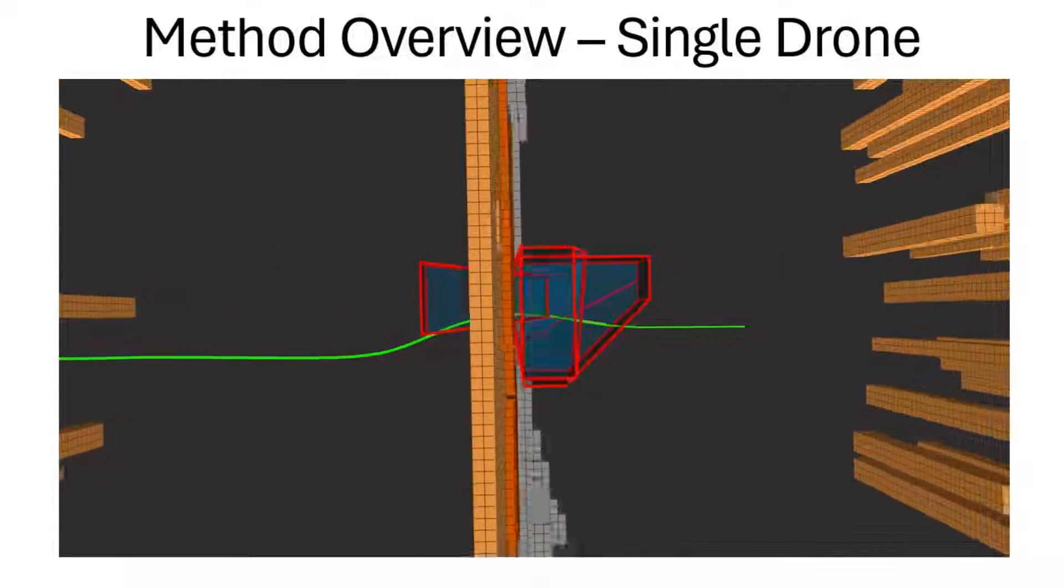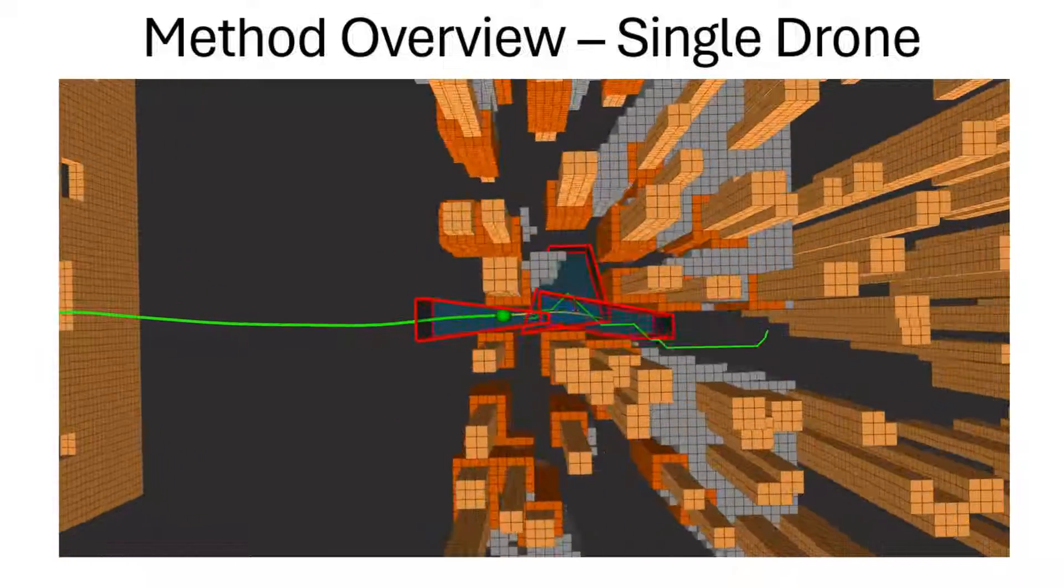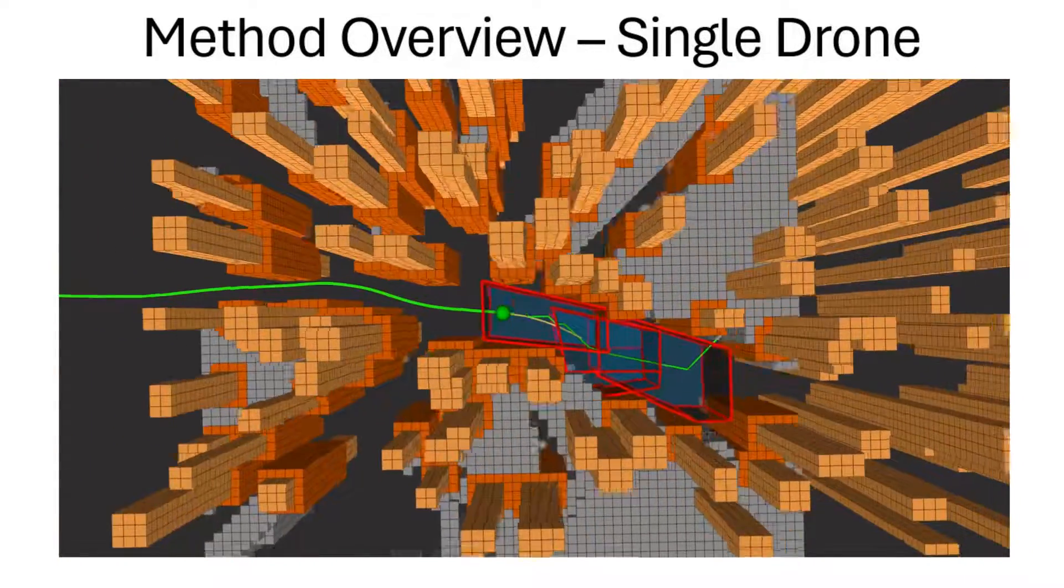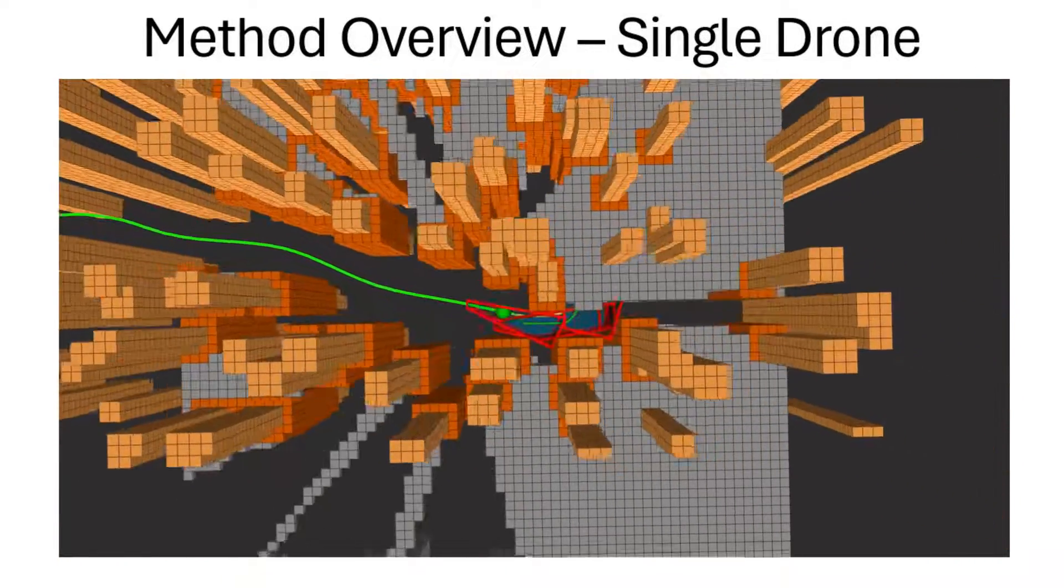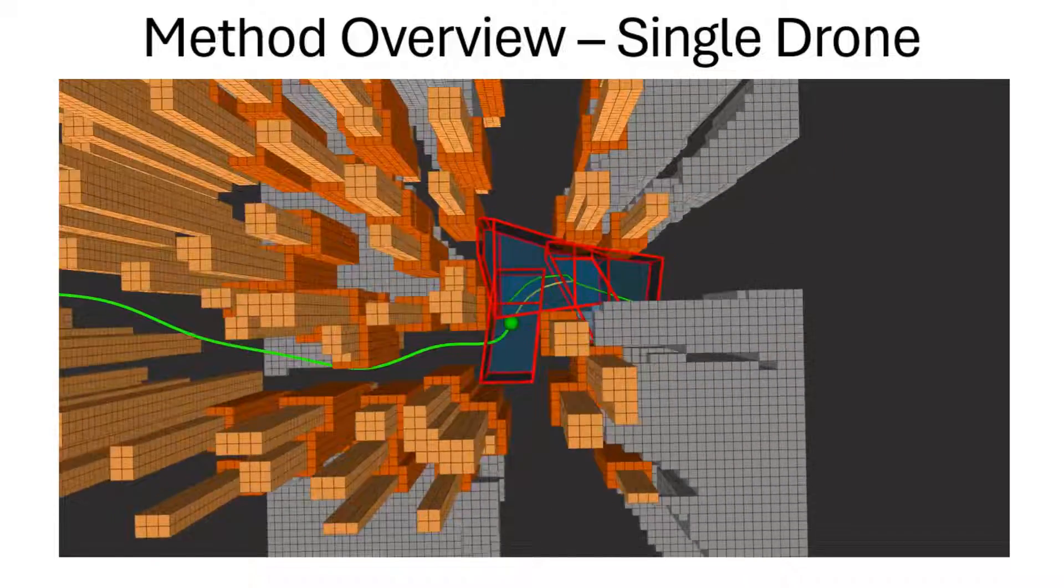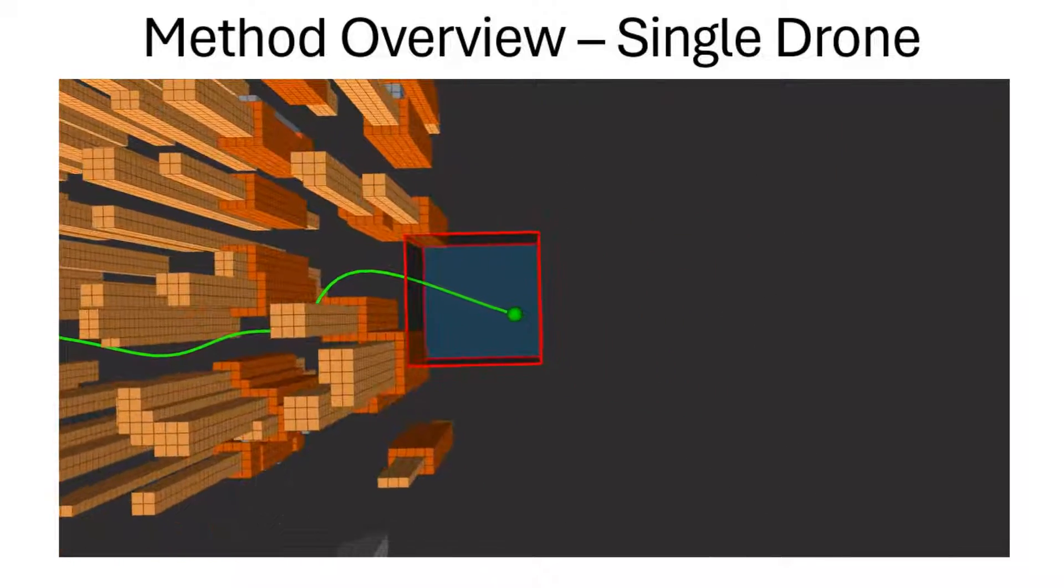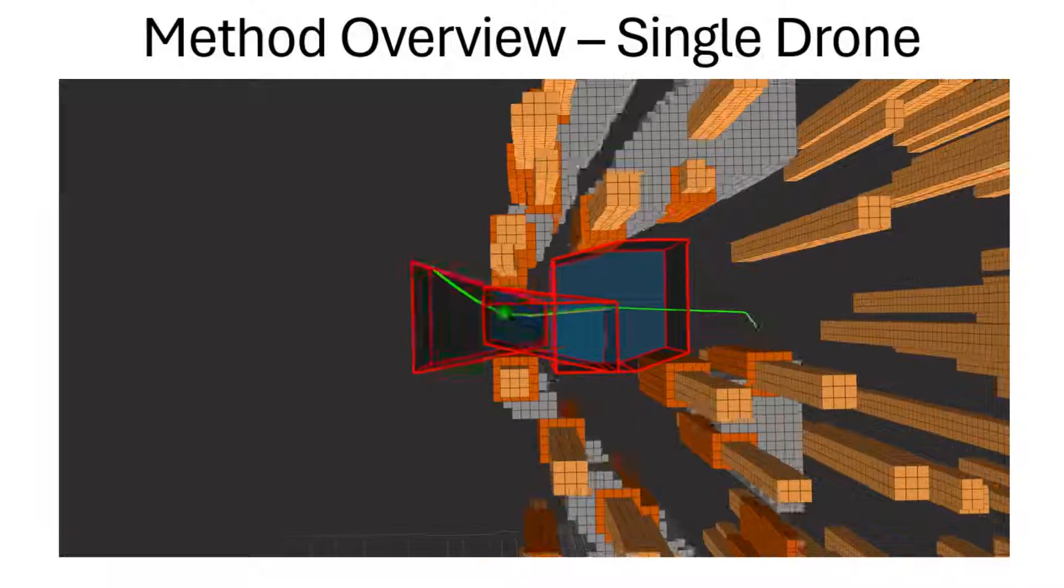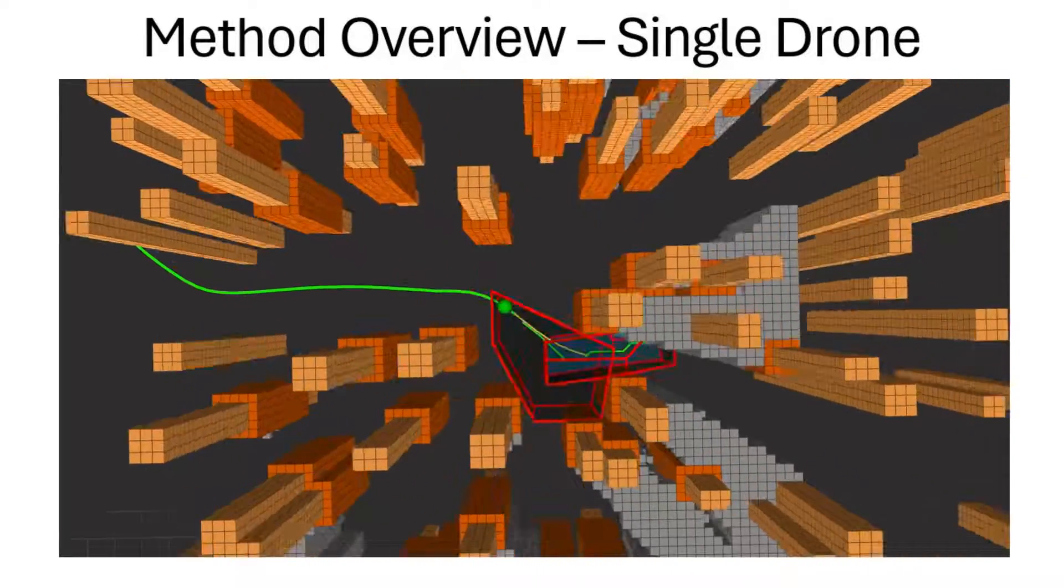The environment is represented as a voxel grid, where occupied voxels are shown in light orange and the unknown voxels that are yet to be seen by the drone are shown in grey. The occupied voxels are inflated by the drone size and the inflated voxels are shown in dark orange.